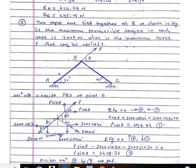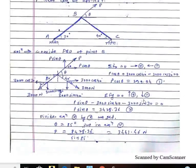Resolving all three forces into horizontal and vertical components: Applying ΣFx = 0: P cos θ + 3000 cos 40° − 3000 cos 30° = 0, so P cos θ = 299.94 N (Equation 1). Applying ΣFy = 0: P sin θ − 3000 sin 40° − 3000 sin 30° = 0, so P sin θ = 3428.36 N (Equation 2). Dividing equation 2 by equation 1 gives tan θ, so θ = 85°. Substituting back, P = 3441.46 N.